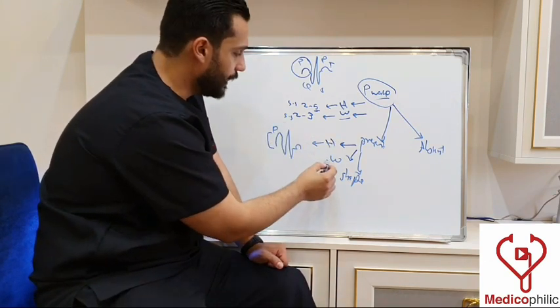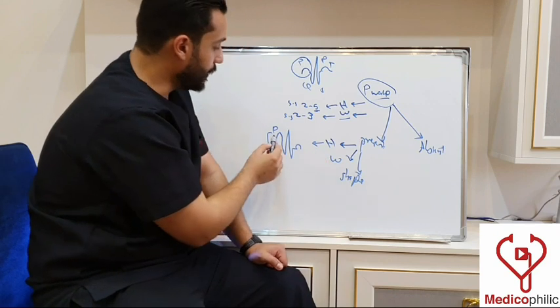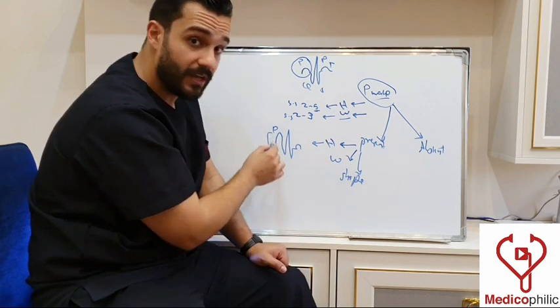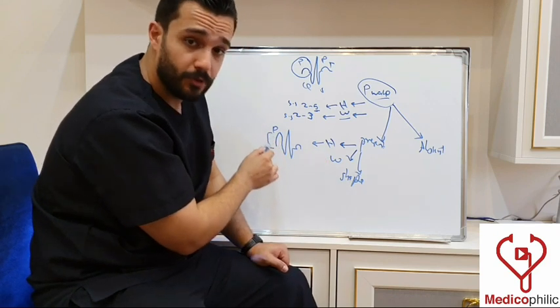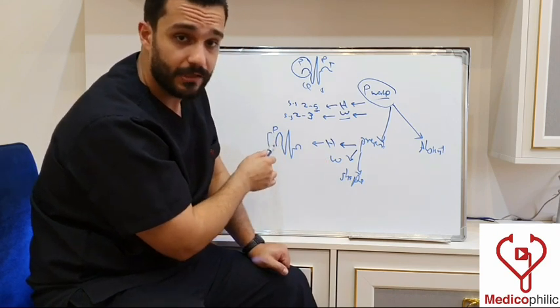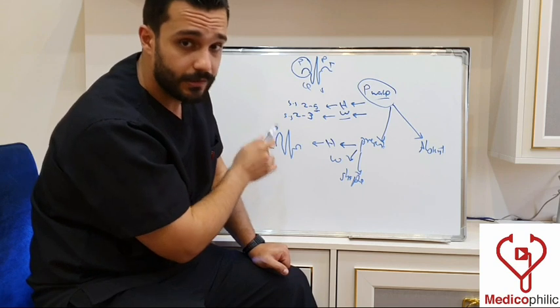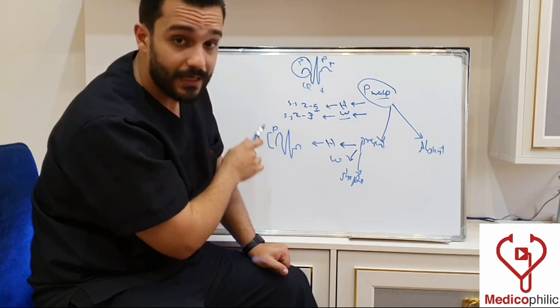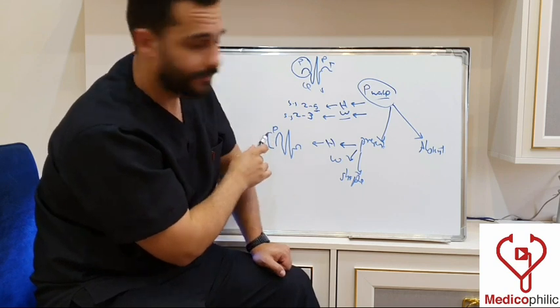P pulmonale, or pulmonary hypertension, may cause right atrial enlargement.